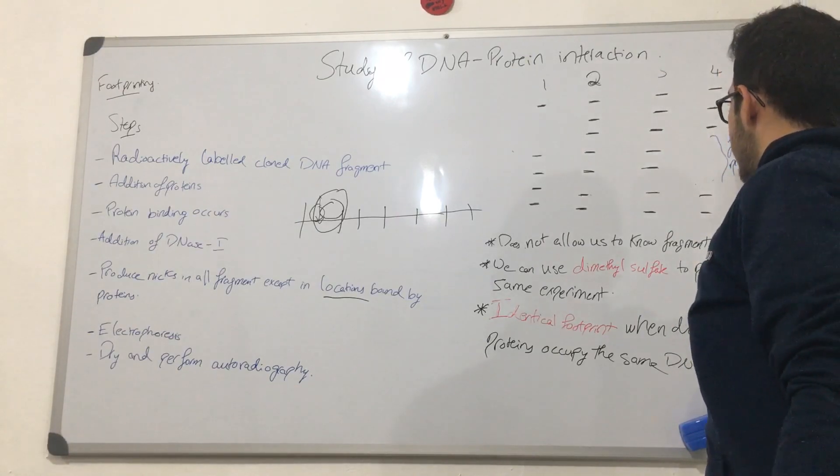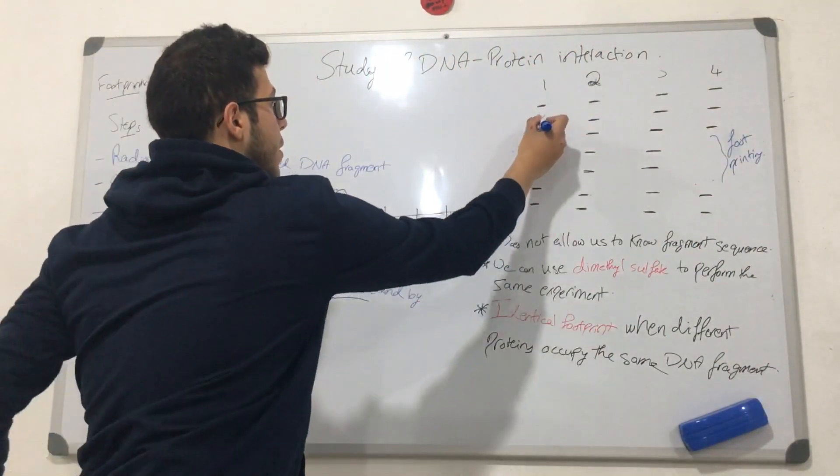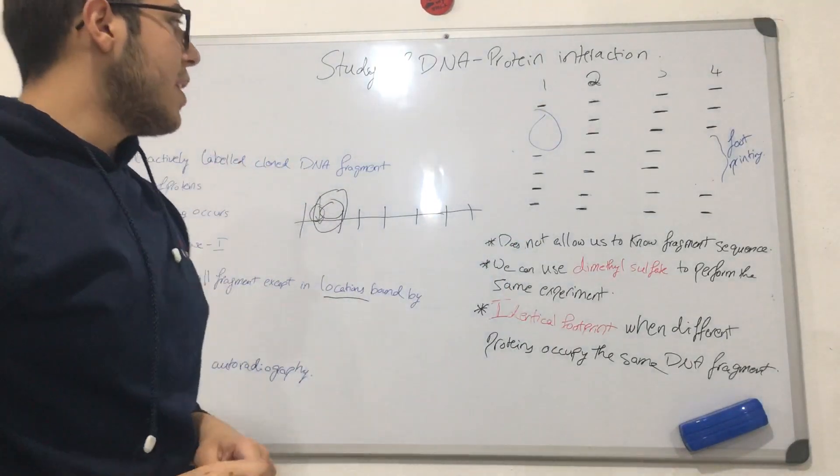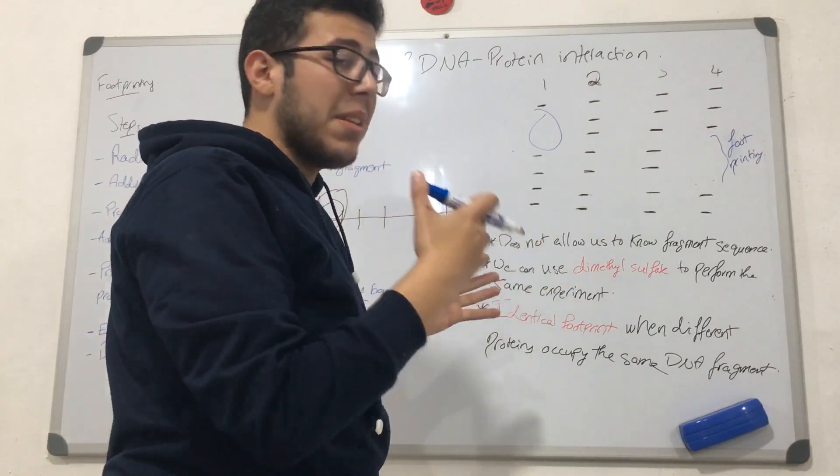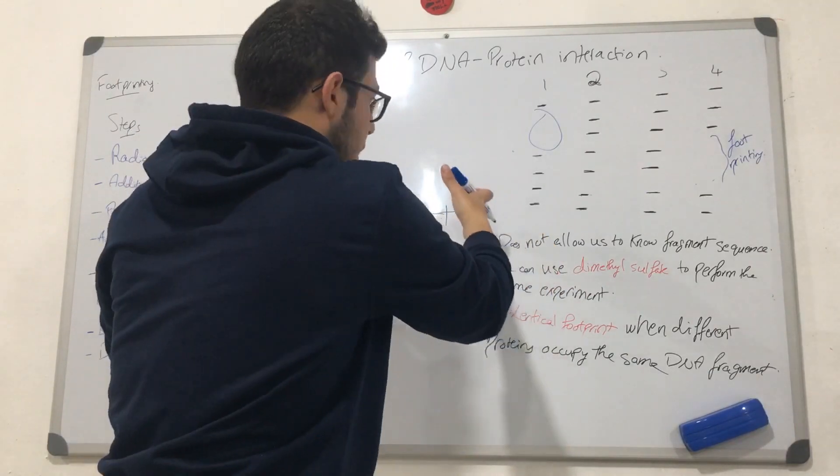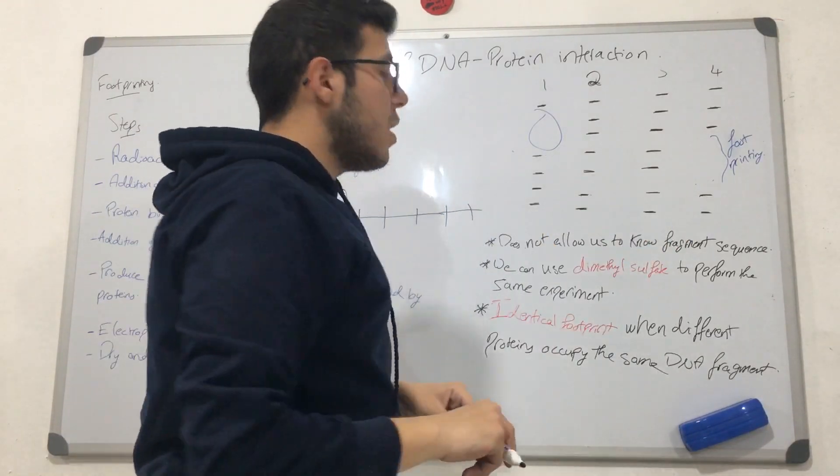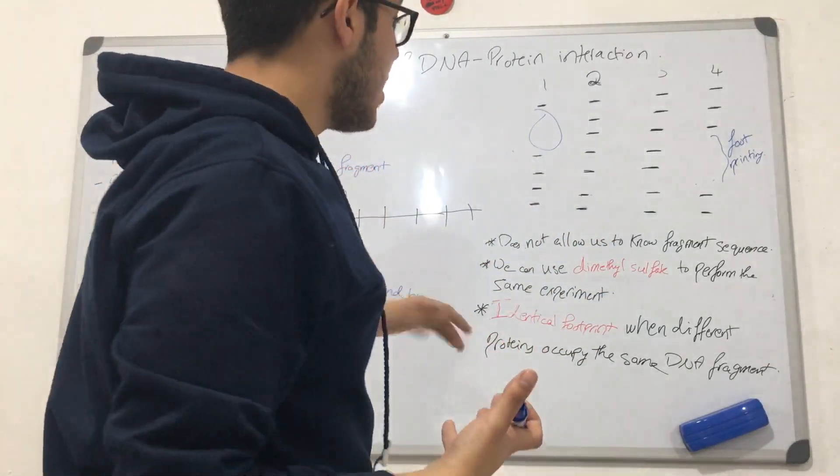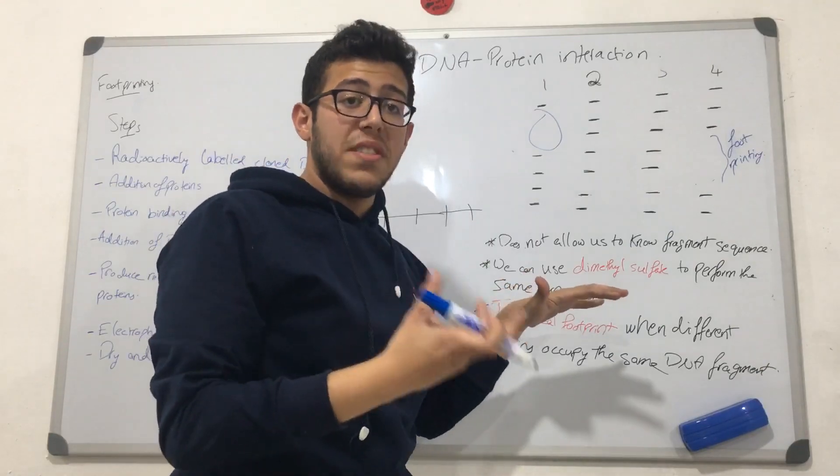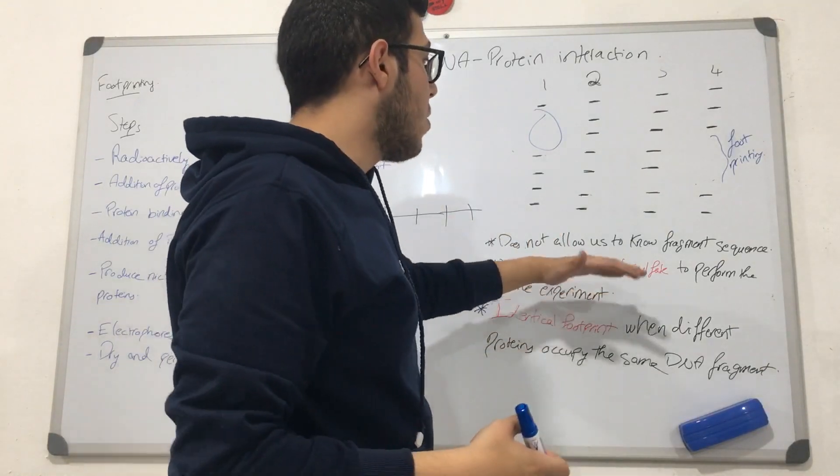A couple of things we have to keep in mind. This process does not allow us to know the fragment sequence. The fragment that we're talking about, we cannot know the sequence. This is an enzymatic way to perform DNA footprinting. However, we can also do the same process chemically, using the chemical dimethyl sulfate.